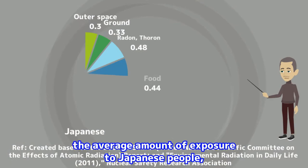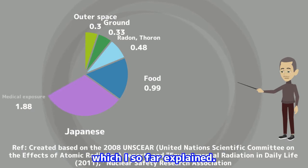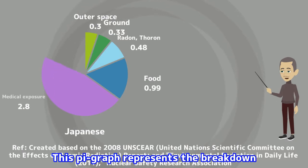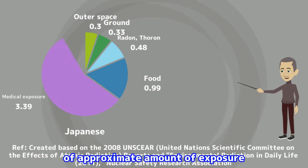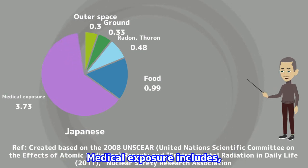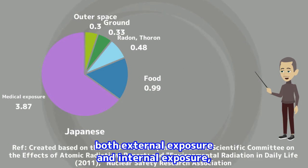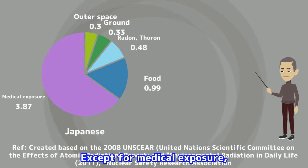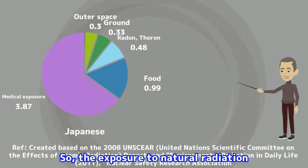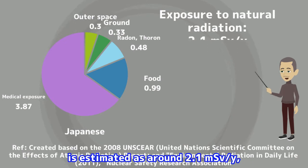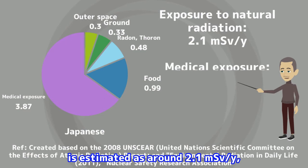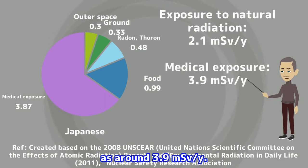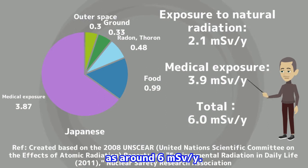Okay, let me elaborate the average amount of exposure to Japanese people in each type of source aforementioned. This pie graph represents the breakdown of approximate amount of exposure to Japanese people. Medical exposure includes both external exposure and internal exposure, so they can't be clearly distinguished. Except for medical exposure, they derive from natural radiation. The exposure to natural radiation is estimated as around 2.1 millisievert per year, and the medical exposure is estimated as around 3.9 millisievert per year, and totally it is estimated as around 6 millisievert per year.